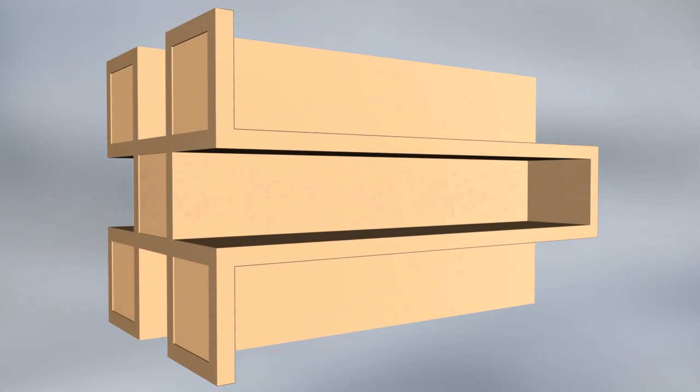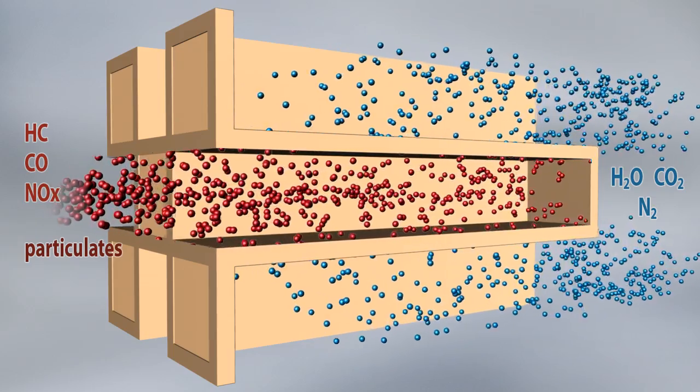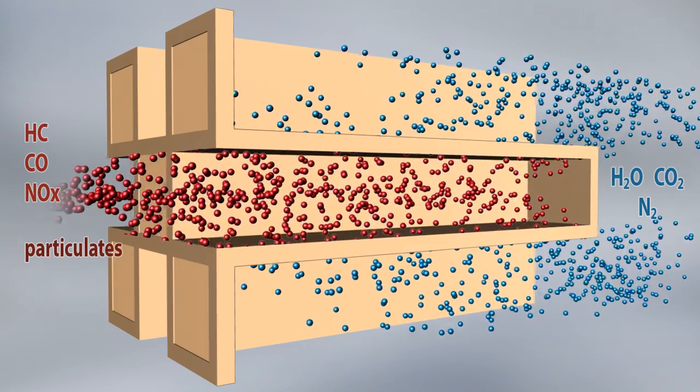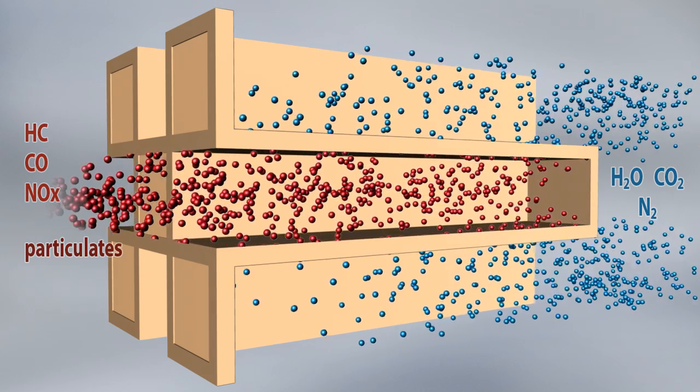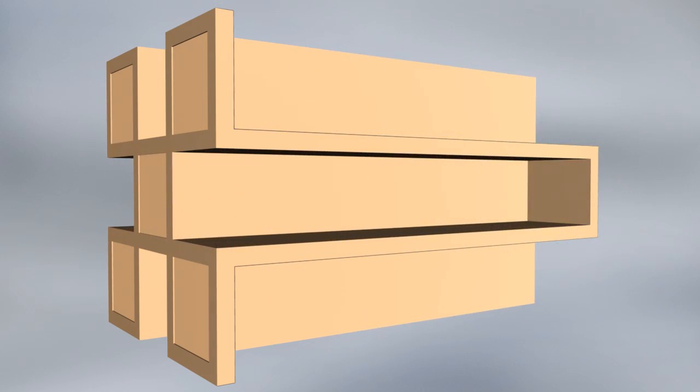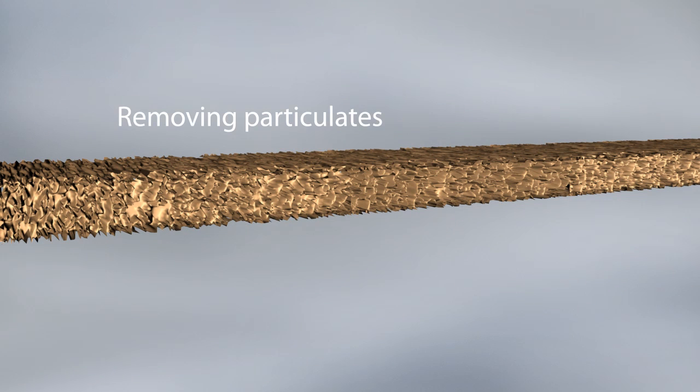The special feature of the four-way conversion catalyst - the channels are alternately closed. It therefore also functions as a filter because in order to reach the exhaust system, the exhaust gas flow first has to pass through the wall between adjacent channels.